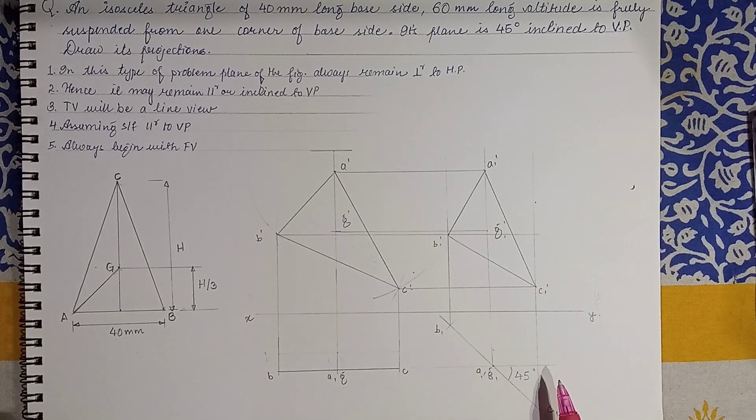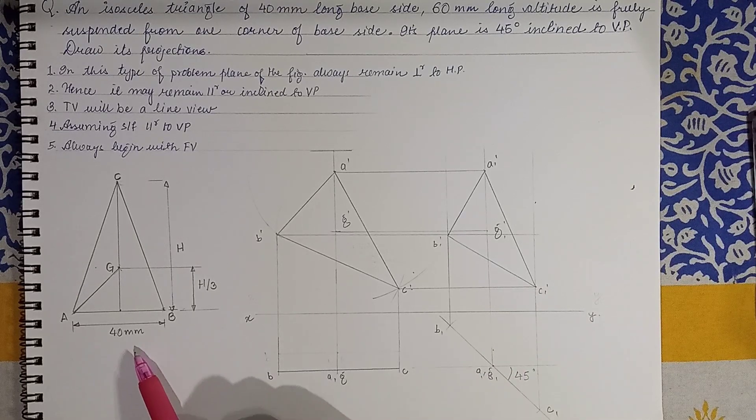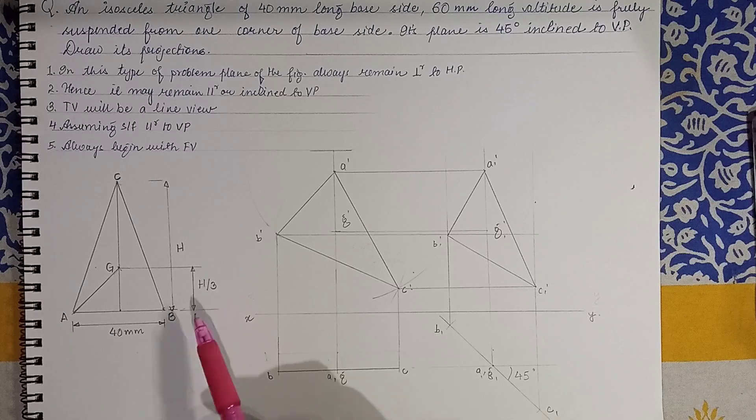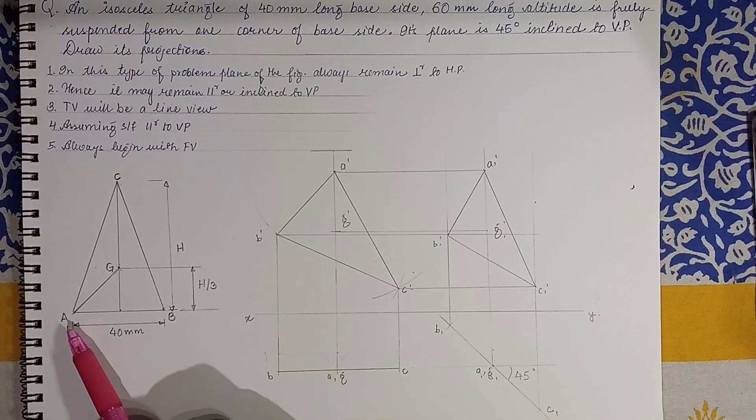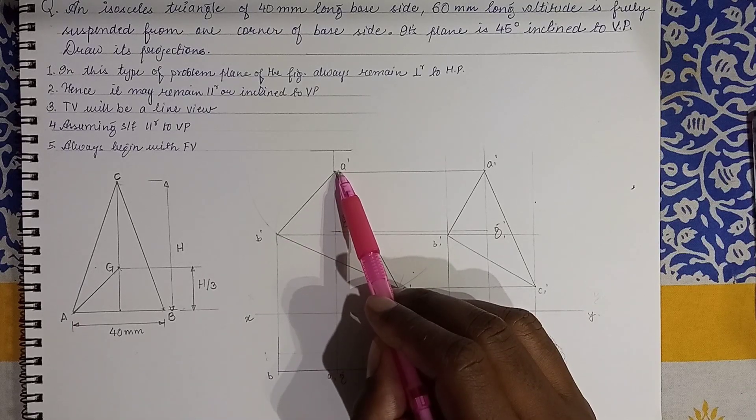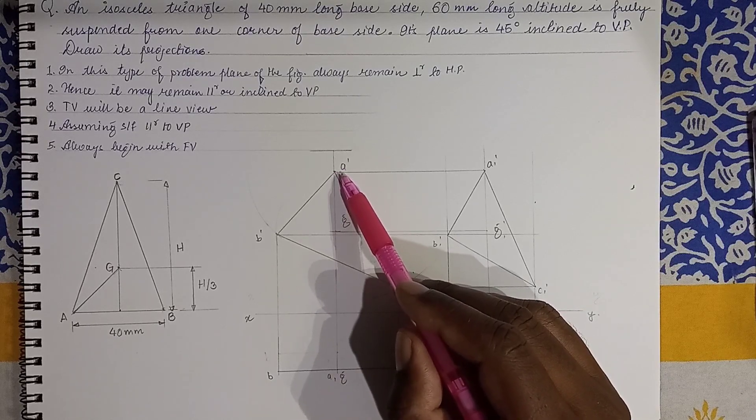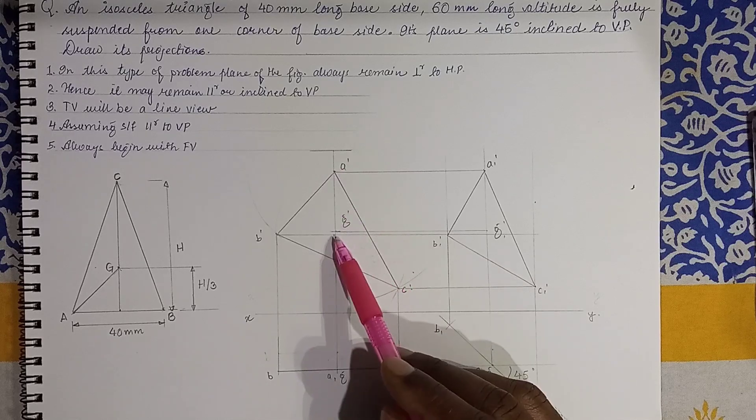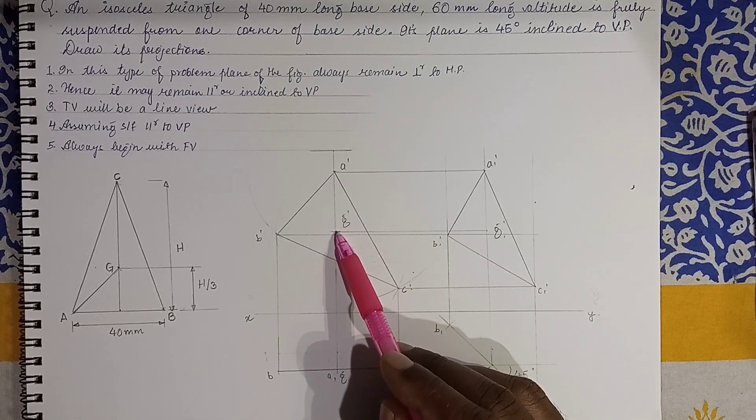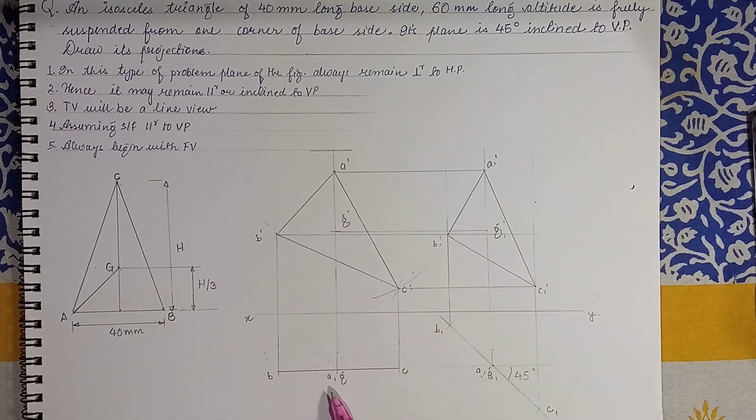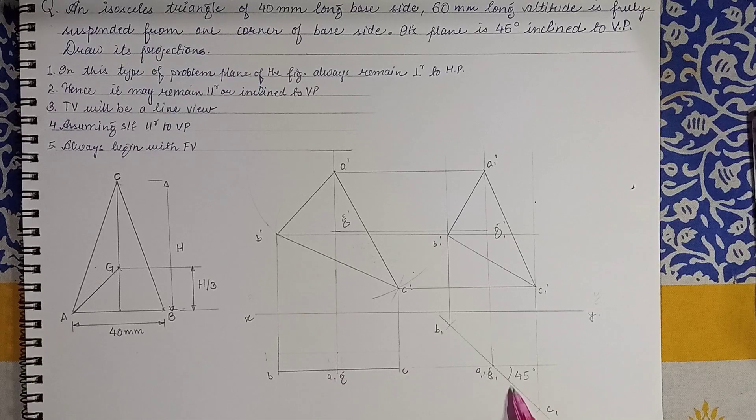So just a short revision—a triangle, isosceles triangle of given dimension is given. We have found out G which is at a distance of h by 3, and it is suspended about one of the points of the base. So A ke about humne usko tanga diya hai. Now when you hang it, one thing is that along this line center of gravity will come on point centroid. So accordingly we regenerate this figure and it is making an angle of 45 degrees with VP. Accordingly we get this projection.